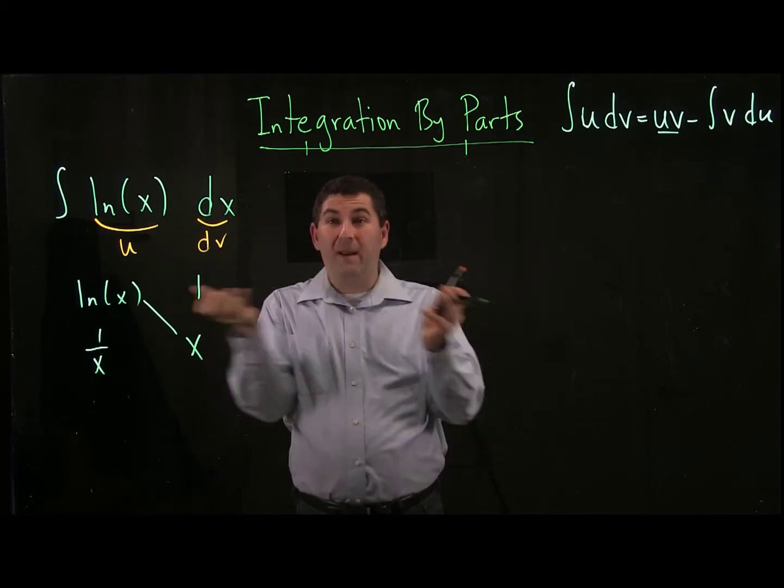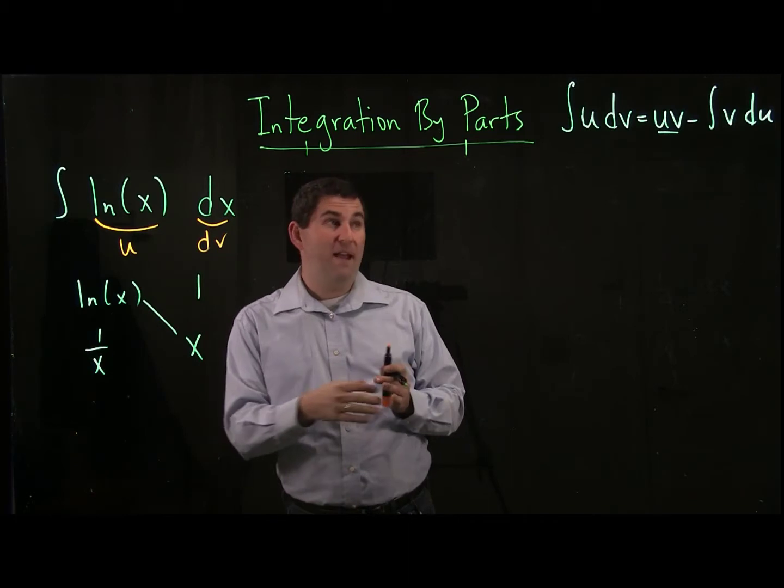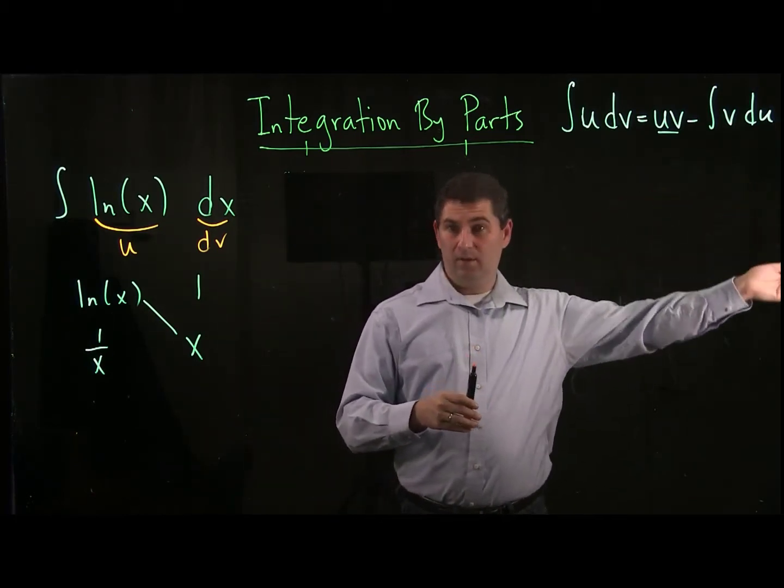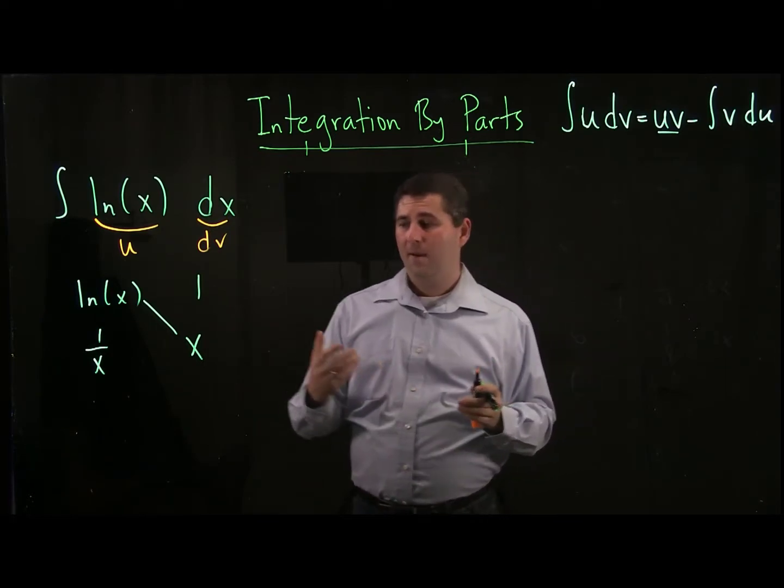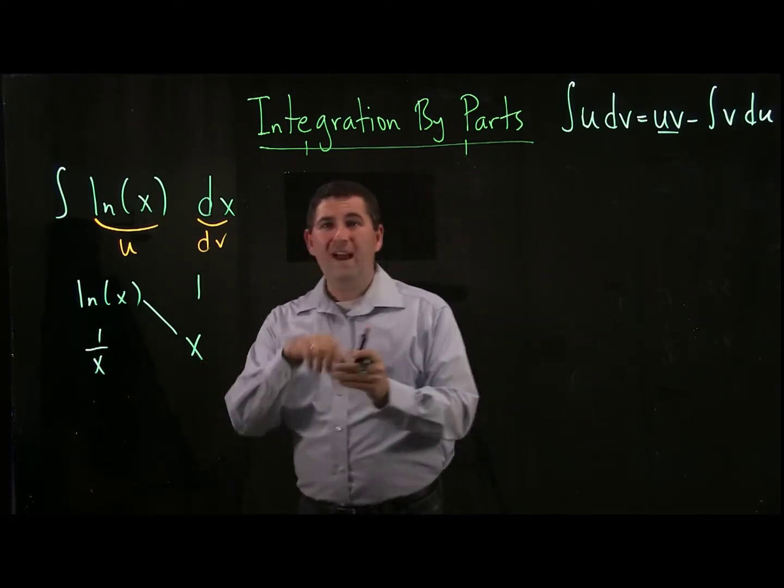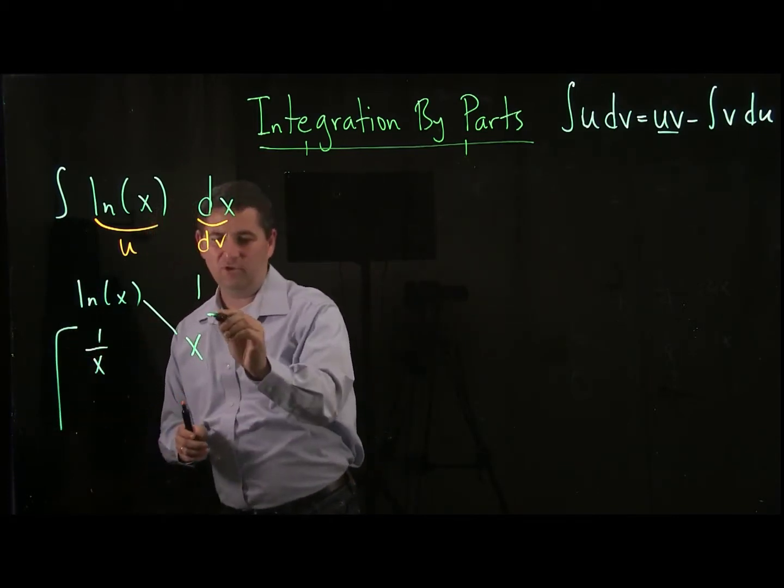And the reason we know it's 1 is because I multiply x times 1 over x. If I didn't multiply it together, I would just have x times 1 over x dx, and I might think I have to do integration by parts again. But that's what we're going to do here. We're going to do that rearranging so that we don't have to actually do anything interesting anymore.